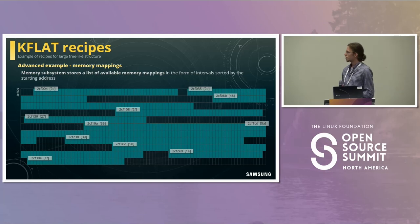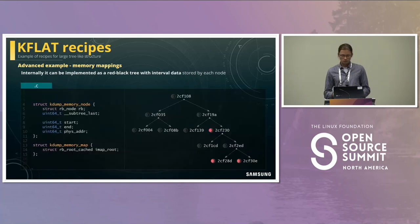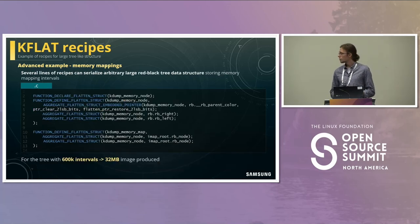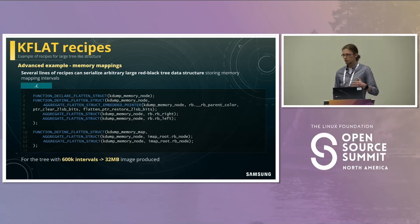Let's take a look at a more complicated example: an interval tree. Imagine creating a kernel interval tree and pushing into it all the virtual memory regions allocated in the kernel. Under the hood, such an interval tree is implemented using red-black trees. Using just a few lines of code, KFLAT can dump this memory without any problem. For an interval tree with 600,000 intervals, the produced image is around 32 megabytes, so it's quite portable, and the flattening process takes just a few milliseconds — almost instantaneous.